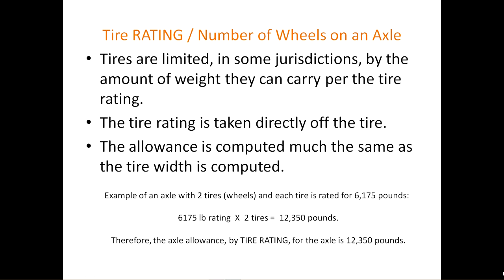Tire rating and number of wheels on an axle. Tires are limited in some jurisdictions by the amount of weight they can carry per the tire rating, taken directly off the tire. The allowance is computed much the same as the tire width. For an axle with two tires, each rated for 6,175 pounds: 6,175 times two equals 12,350 pounds — the axle allowance by tire rating.